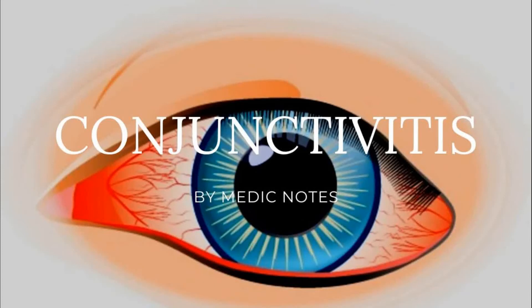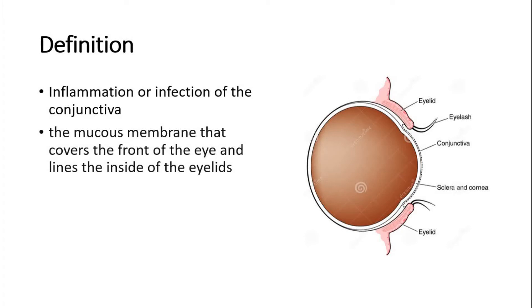In this video, I'm going to talk about conjunctivitis. Conjunctivitis is the inflammation or infection of the conjunctiva, which is the mucous membrane that covers the front of the eye — meaning the sclera, the front part of the sclera — and also covers the inside of the eyelids. We can see in this picture here the conjunctiva, the thin membrane.